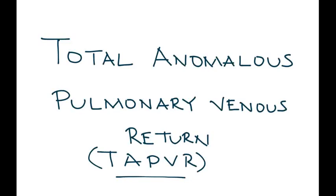Total anomalous pulmonary venous return, abbreviated TAPVR. The best way to explain this is to draw a diagram of the heart and show exactly what's going on in this congenital heart defect.